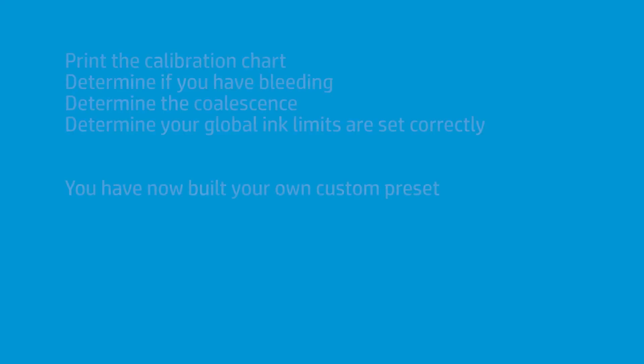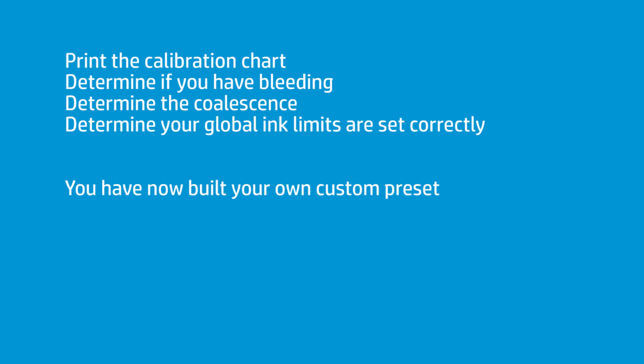Then you would go through the three steps, and they're very clear, very simple. You print the calibration chart. You determine if you have bleeding. You determine if you have coalescence. And you determine if you have your global ink limits correctly. The next two charts are automated — you just hit Color Calibrate, and then ICC Profile, and you're good to go. You have now completely built a custom preset for your specific media.